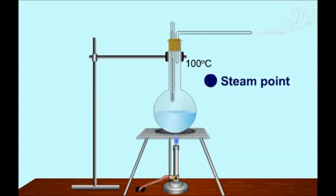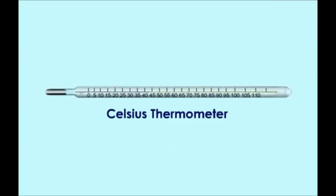At this temperature, water boils at 100 degrees Celsius to produce steam, and this temperature of steam is marked as the upper fixed point in a thermometer. After marking the upper and lower fixed points, the gap between these two points is equally divided.